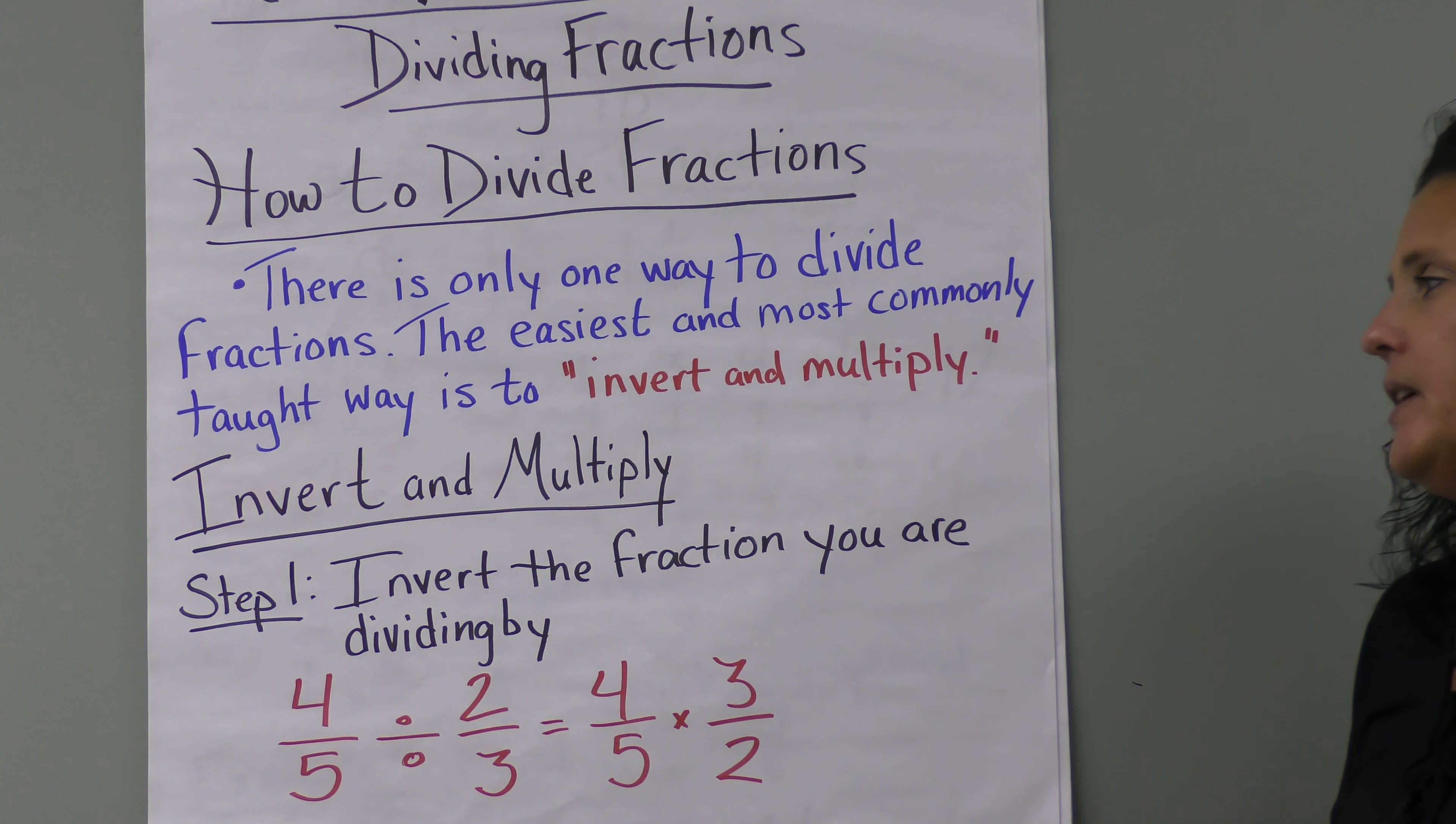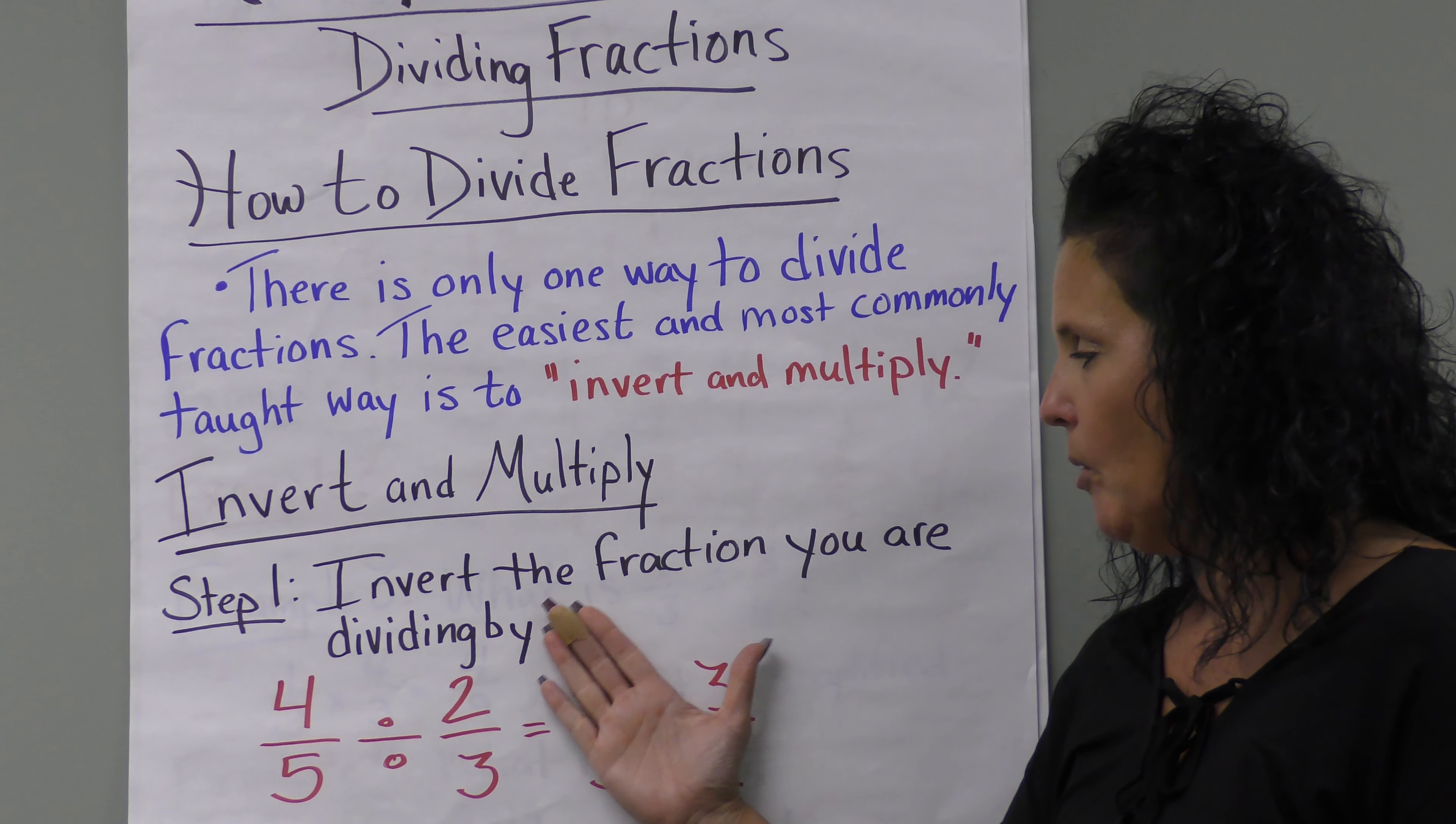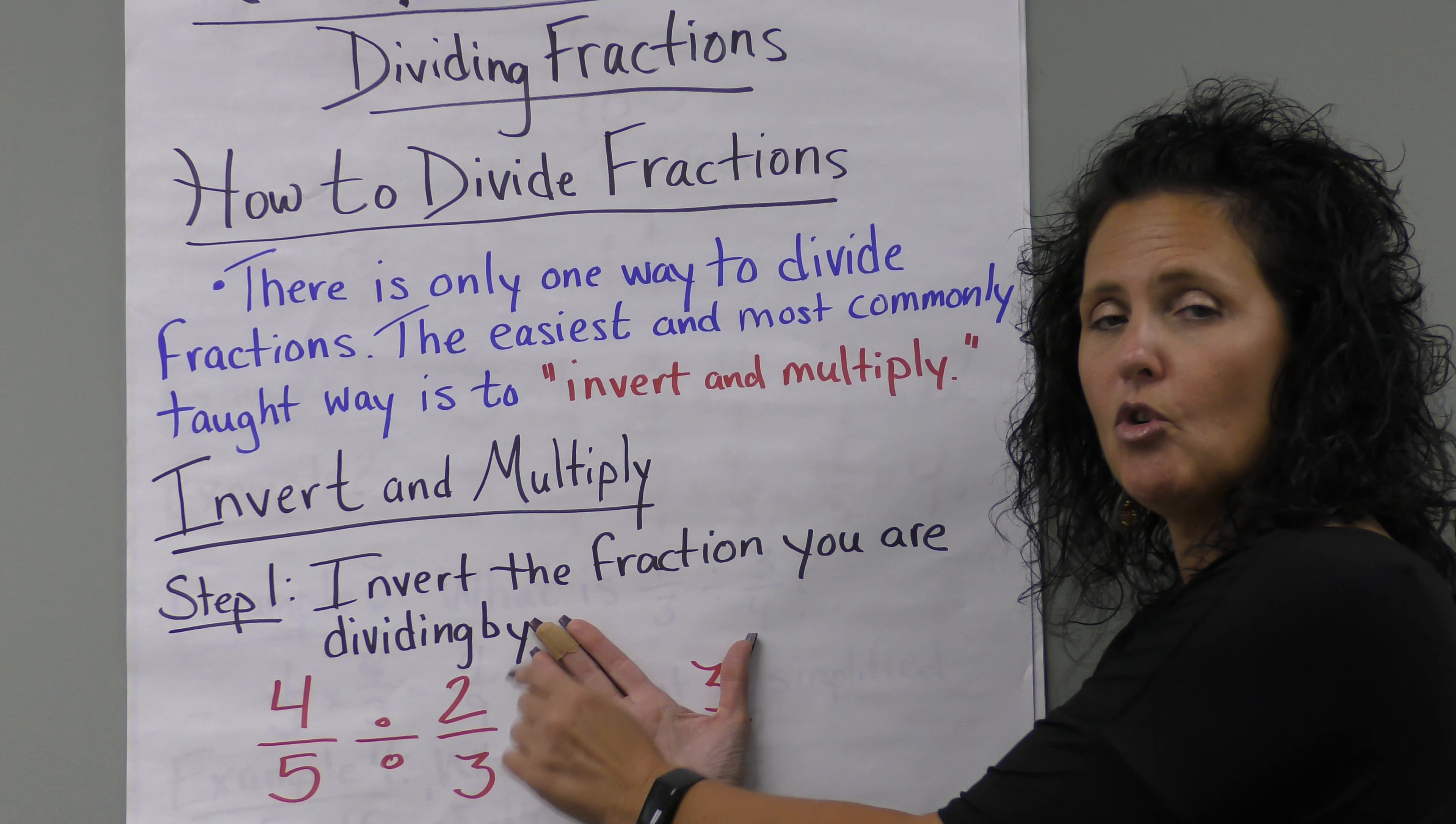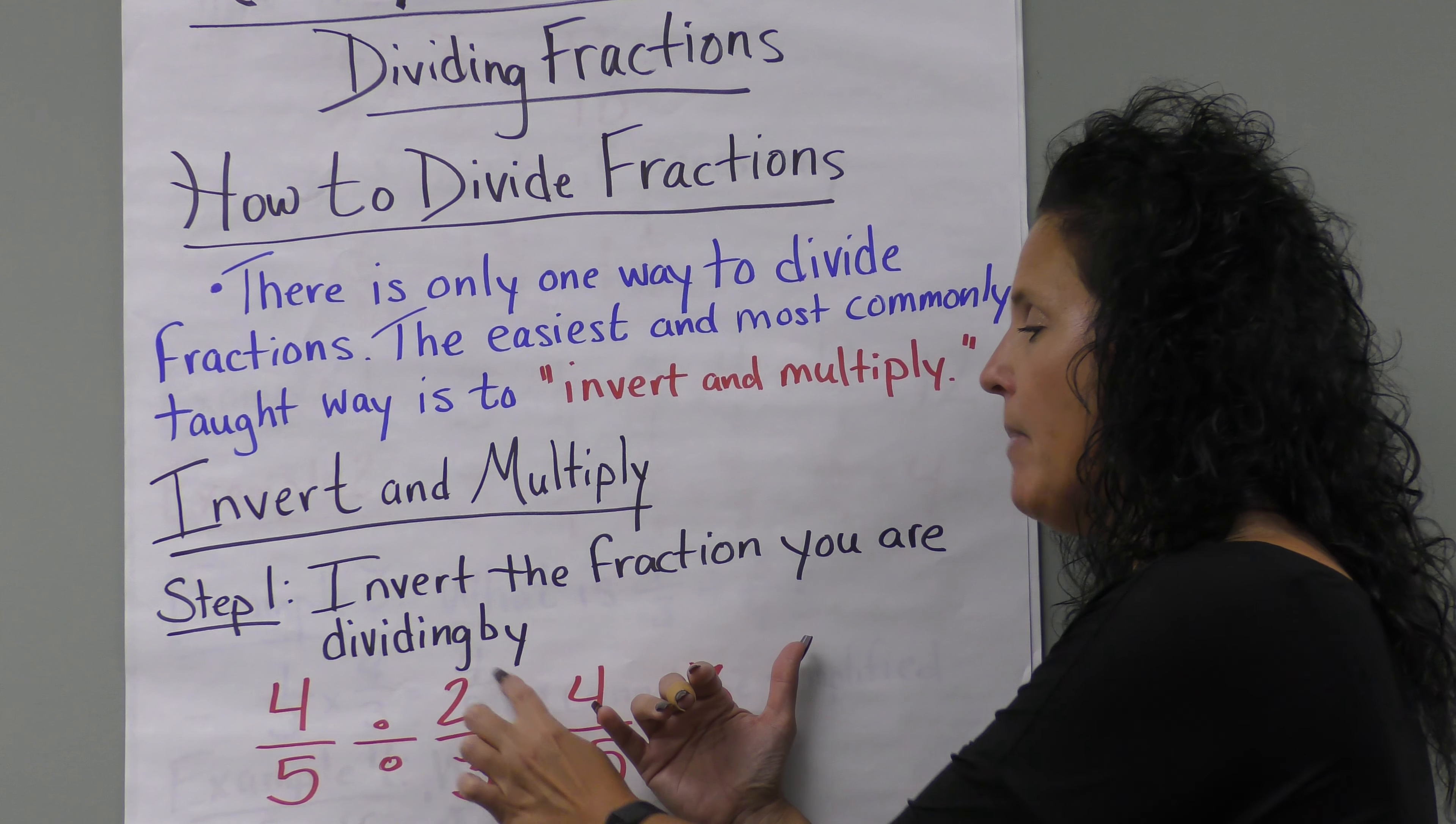Let's look at the three steps. Step one: invert the fraction we are dividing by. When we look at this expression, we have four-fifths divided by two-thirds. Make sure you're inverting the correct fraction—it's the one we are dividing by.